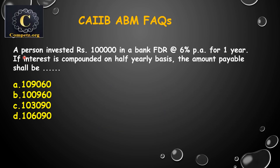We will see the question here from CIA B ABM frequently asked questions. A person invested rupees 1 lakh in a bank FDR, that is a fixed deposit, and the rate of interest is 6 percent per annum for one year. If the interest is compounded on a half-yearly basis, the amount payable shall be — with options: 1 lakh 9060, 1 lakh 960, 1 lakh 3090, and 1 lakh 6090.